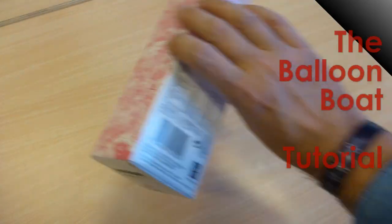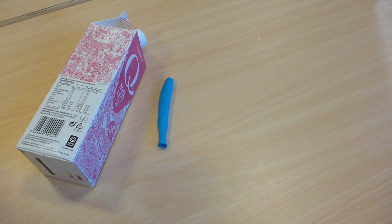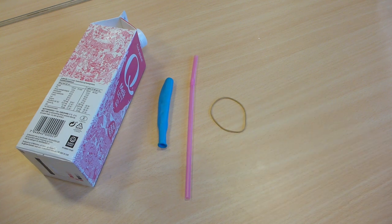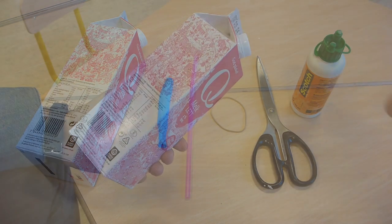The balloon boat is easy to build. You need a milk carton, a toy balloon, a bendy straw, a rubber band, a pair of scissors, and some glue.